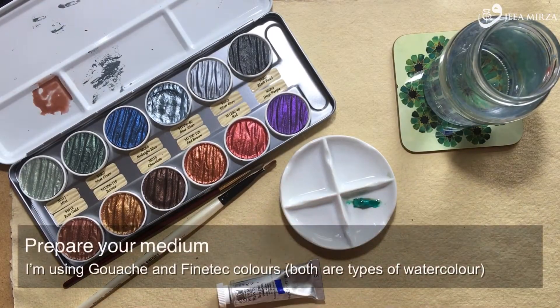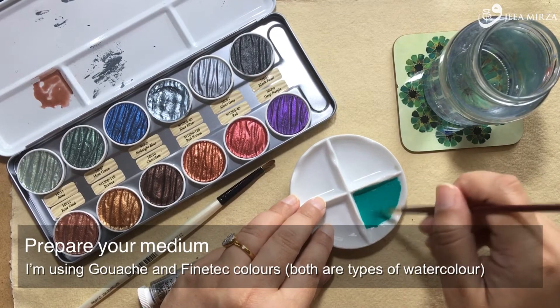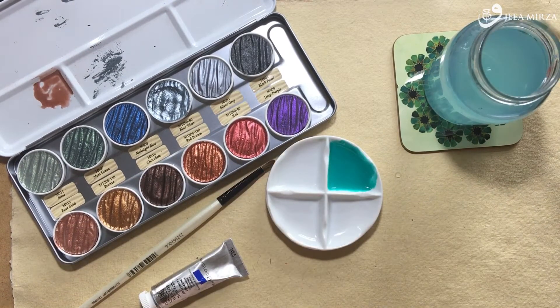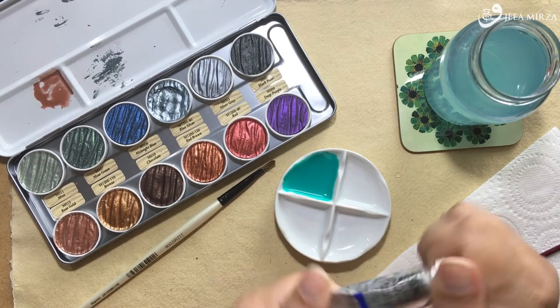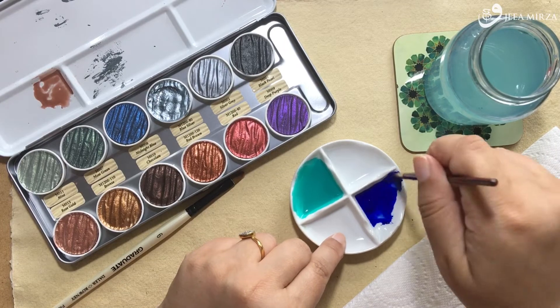The next thing to do is to prepare your medium. I'm going to use gouache today, which is a type of watercolour. So I've squeezed a little bit into my palette, and I'm just mixing it up into the consistency that I like, which is like melted ice cream. That works really well for me.